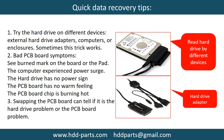There are some simple ways to recover data from a hard drive. One is to try reading the hard drive using different devices, such as different external hard drive adapters, computers, or enclosures. Because different devices read a hard drive in different ways, sometimes this trick works. Another way is swapping the hard drive PCB board, which can fix problems caused by the PCB board. There is a cost to swapping the PCB board, but it is much cheaper than sending the hard drive to a data recovery firm.